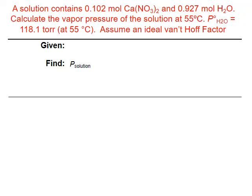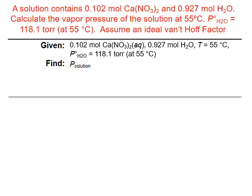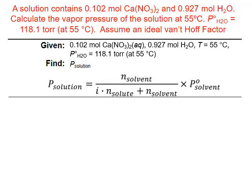Incorporating a Van't Hoff factor into our calculation for vapor pressure lowering is a little different from the other colligative property formulas. The Van't Hoff factor must be included in the denominator of the mole fraction, because this is the only place that the number of solute particles appears in the concentration. We're given the moles of both solute and solvent (water), the vapor pressure of pure water at this temperature, and told to assume an ideal Van't Hoff factor.